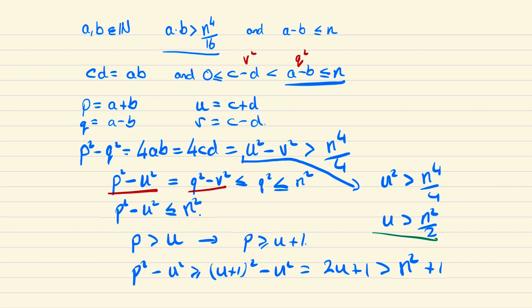But now consider what we've just said we already knew p squared minus u squared was less than n squared and now we're saying p squared minus u squared is greater than n squared plus 1 which is clearly a contradiction and so we must conclude that no second solution exists and hence there can be at most one solution to this problem.